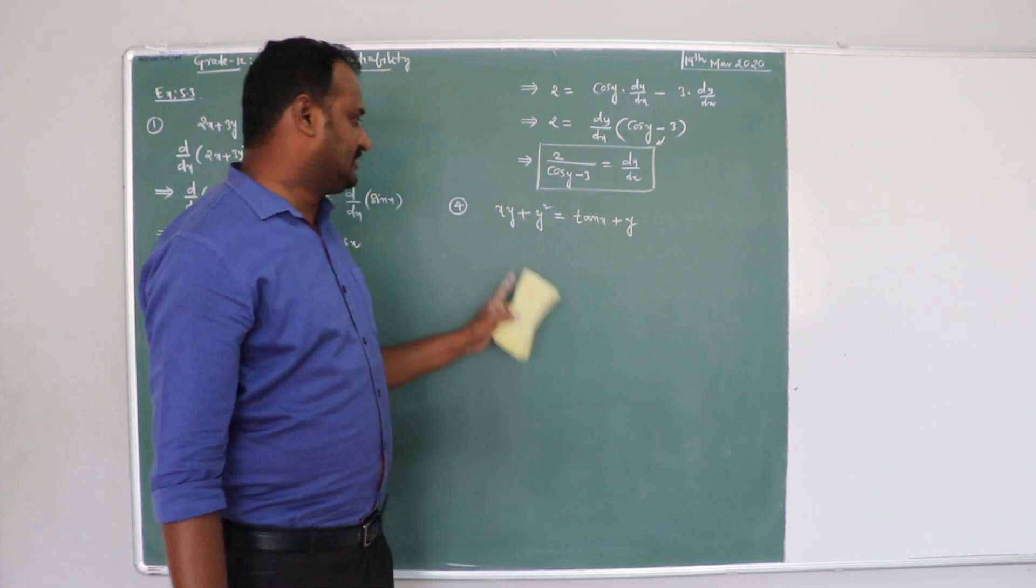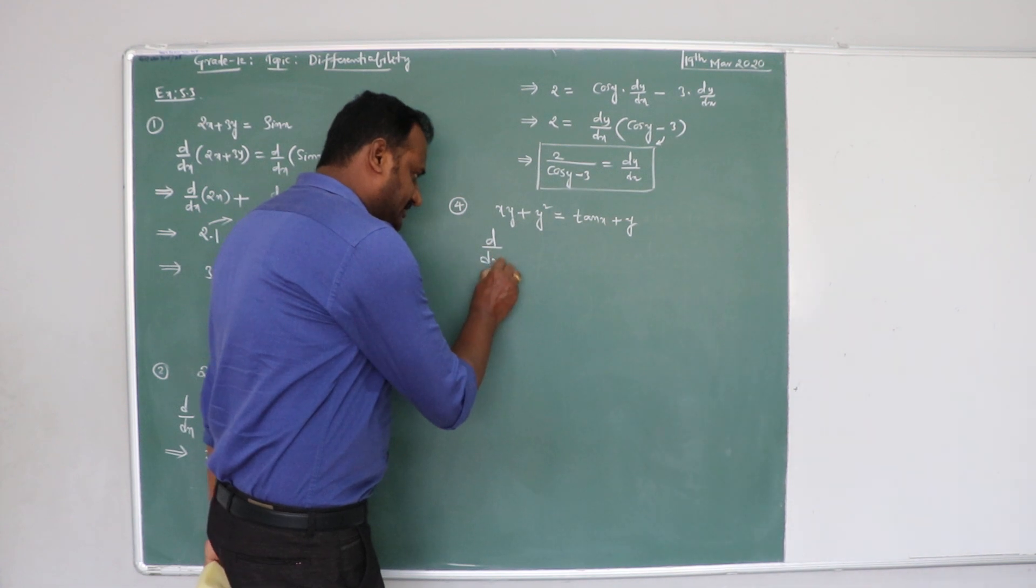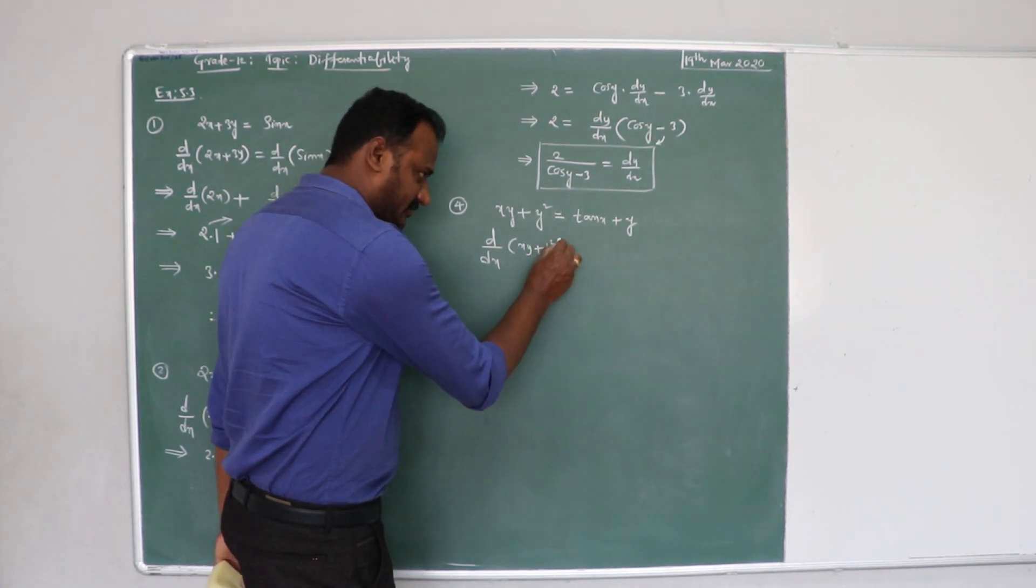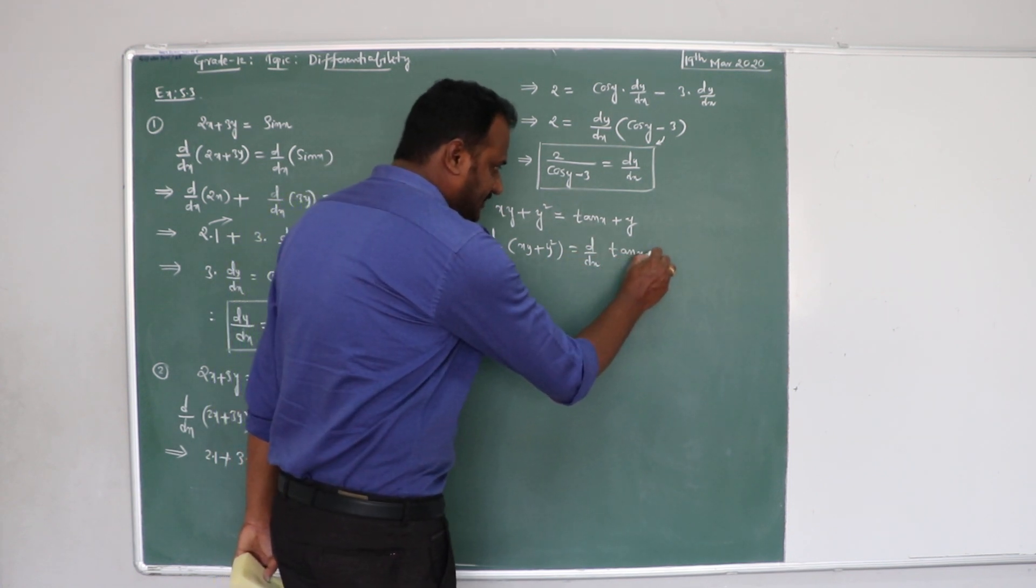Right? So, let's answer this problem. We have to differentiate it on both sides. d by dx of xy plus y squared is equal to d by dx of tan x plus y.